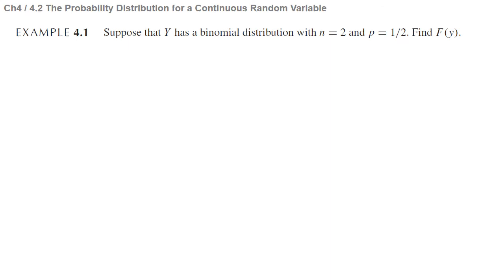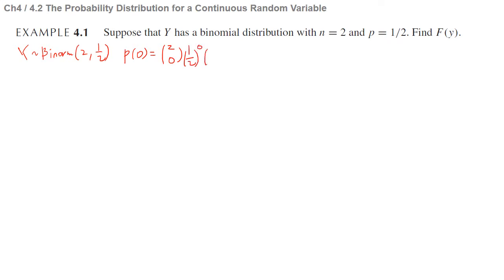Let's look at Example 4.1. Suppose that Y has a binomial distribution with n equals 2 and p equals 1/2. Find F(y). So Y follows a binomial distribution. P(Y=0) = C(2,0) × (1/2)^0 × (1/2)^2, which is 1/4.